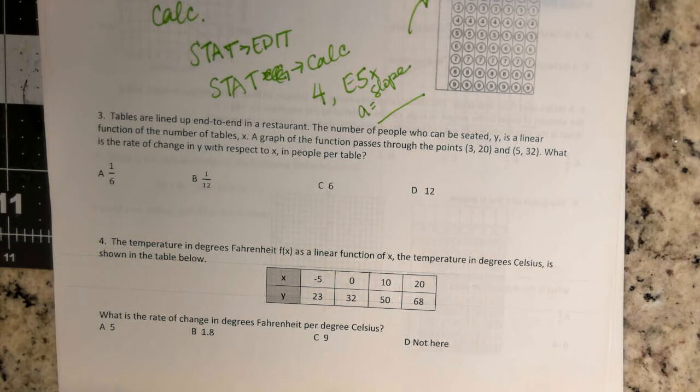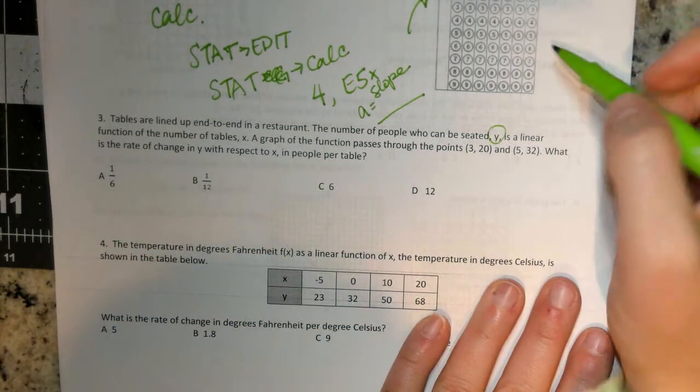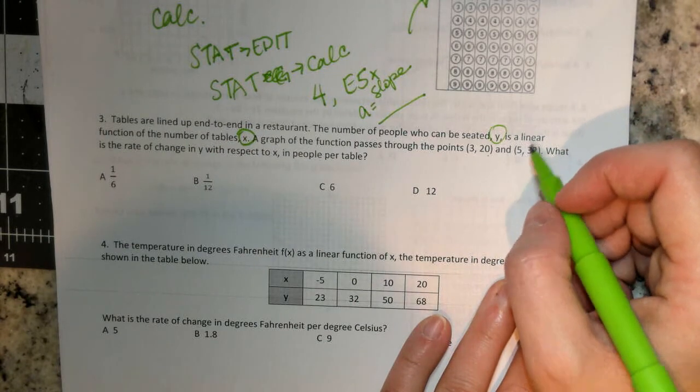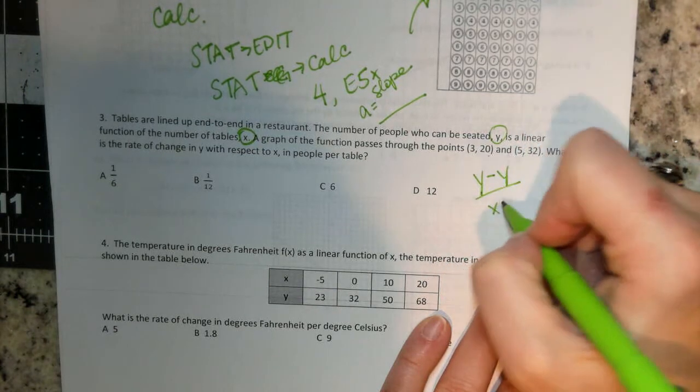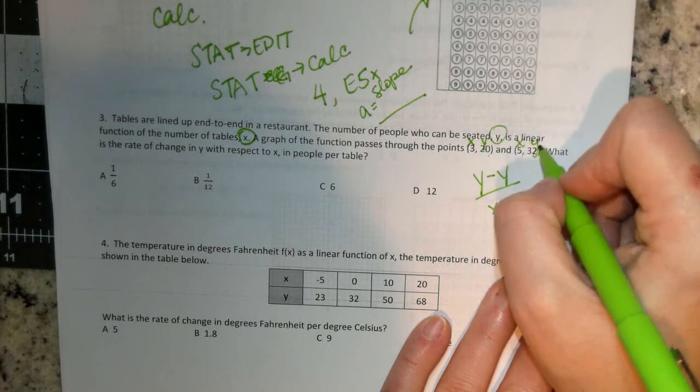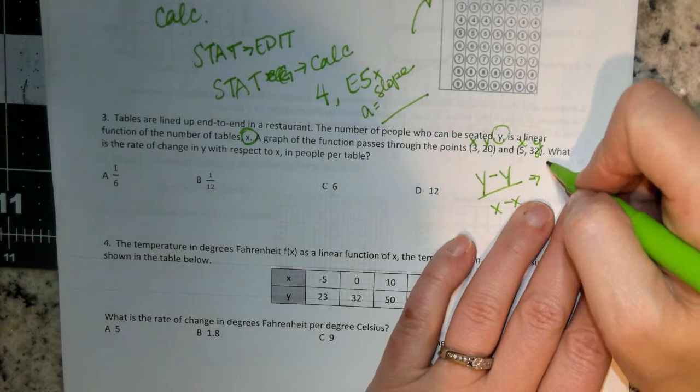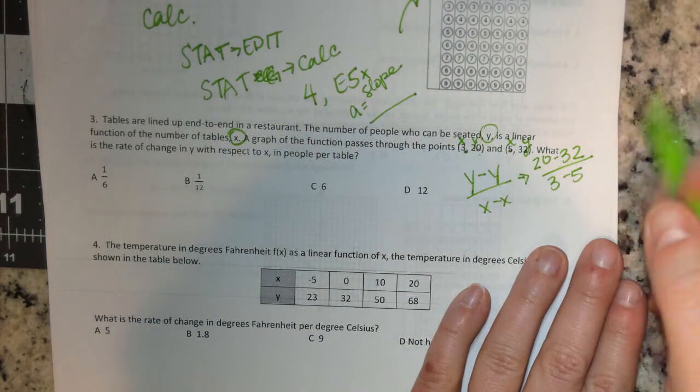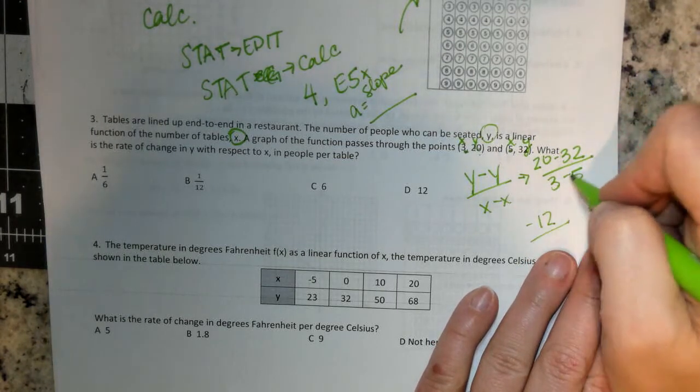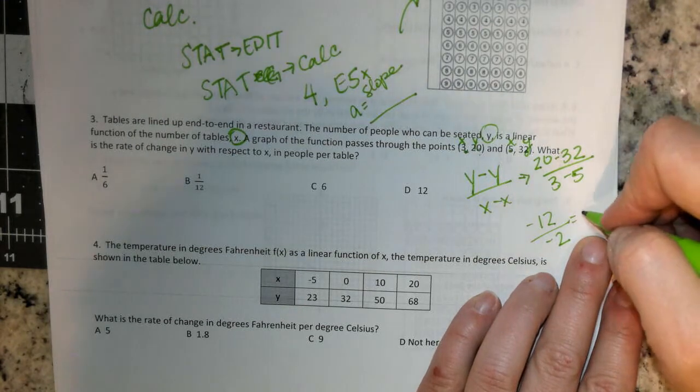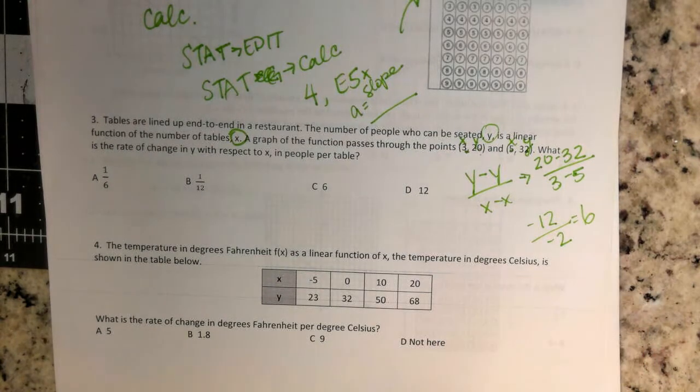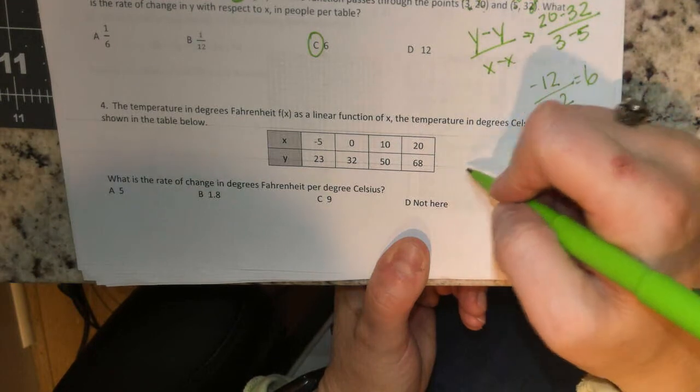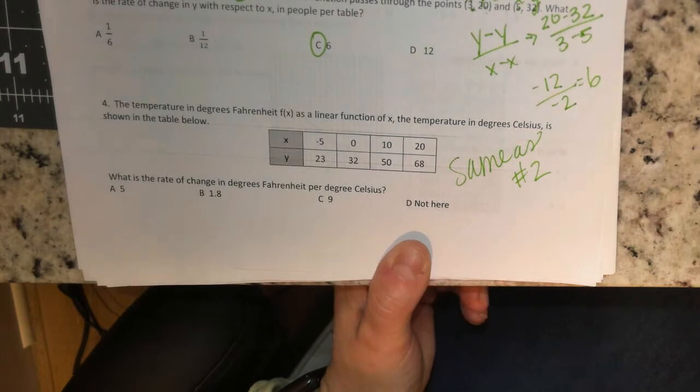Number three, the tables are lined up end to end in a restaurant. The number of people who can be seated is Y, is a linear function of the tables of X. A graph of the function passes through the points 3, 20 and 5, 32. What is the rate of change in Y with respect to X per table? So we're doing, again, Y minus Y over X minus X. This is your X, this is your Y, X, and Y. So we're going to subtract those. We get 20 minus 32 over 3 minus 5. Y minus Y over X minus X. So you have 20 minus 32 is a negative 12. 3 minus 5 is a negative 2. And when you simplify that, you get a positive 6. So there, we'll do that one together. And I want you to do number 5, I mean number 4, the same way as you did number 2.